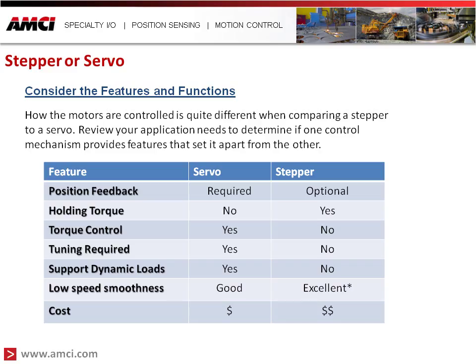Tuning is required with a servo because it is closed loop, which can make control more complex. At very low speeds, oscillation may occur without proper tuning. With a stepper, no tuning is required, making it a simpler control. A servo can support dynamic loads — if the expected load changes, it can output peak torque or peak current to overcome those changes, whereas a stepper cannot. With a servo, we have good load speed smoothness, but with a stepper, microstepping provides excellent low speed smoothness without the hunting that tuning can cause. The servo does come at a much higher cost than a stepper for the same motor size and torque output.